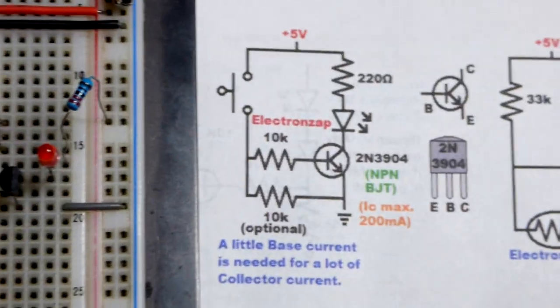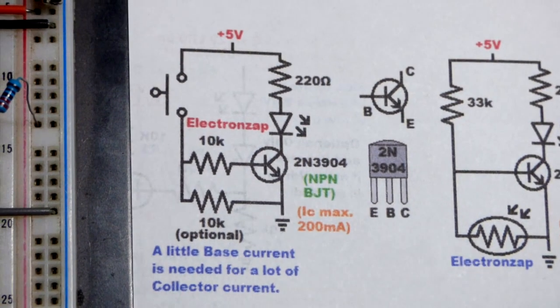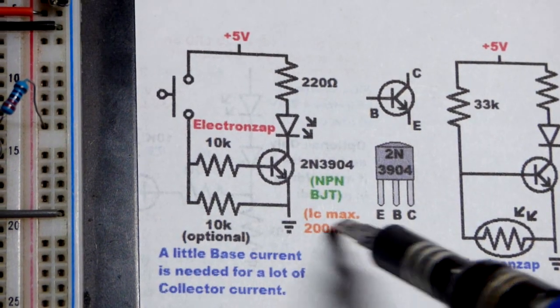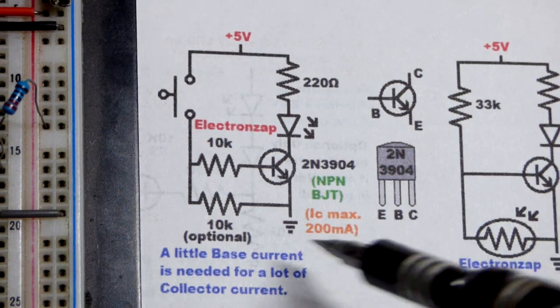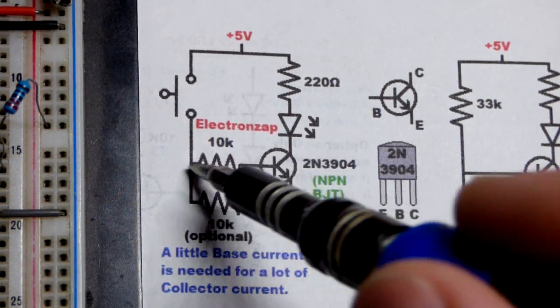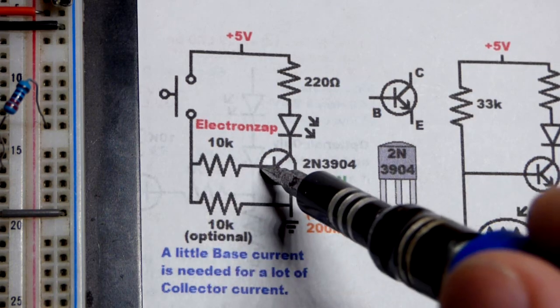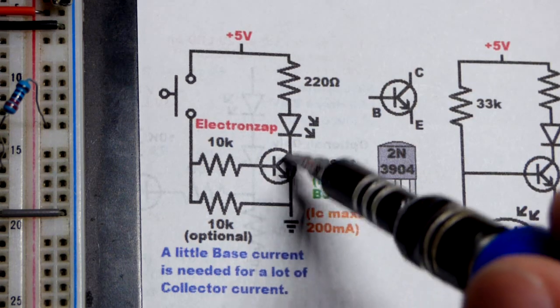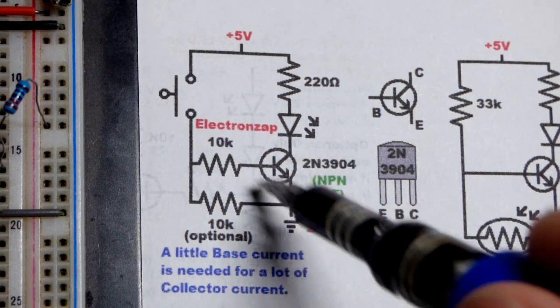We're using the 2N3904 on the board. It has a maximum current of 200 milliamps, so if you need more current, you would have to use a different transistor. I did add a pull-down resistor that helps make sure it stays off. If it's less than about 0.6 volts at the base compared to the emitter, the collector to the emitter will not conduct.